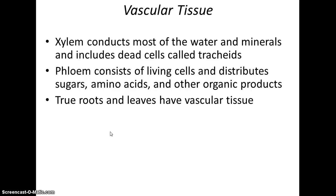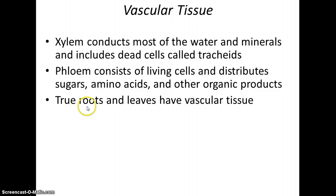Vascular tissue allows plants to efficiently move water around — in the case of xylem — and move the products of photosynthesis around — in the case of phloem — allowing the plant to get larger. Now that we have vascular tissue, we have what we call true roots and true leaves: structures known as roots and leaves that have vascular tissue in them. Mosses don't really officially have roots and leaves.